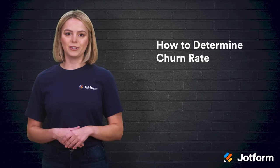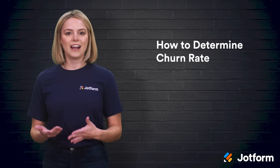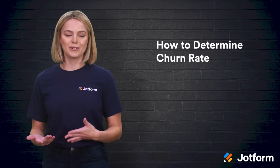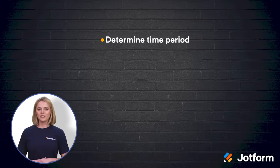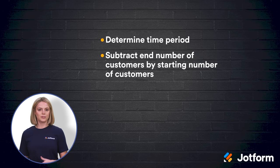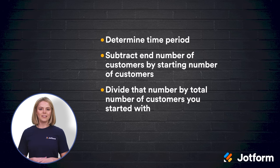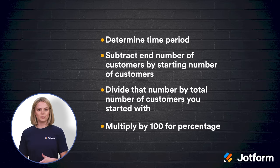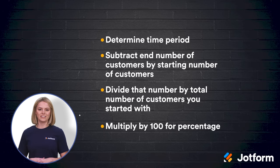Now that you know what customer churn rate is, let's dive into how you can determine your business's customer churn rate. You'll want to determine a time period to measure and focus only on the customers that you lost during that period. Take the total number of customers at the end of the period from the number of customers you started with. Then divide that number by the total number of customers that you started that particular period with. You can then multiply the resulting number by 100 to get your customer churn rate percentage.